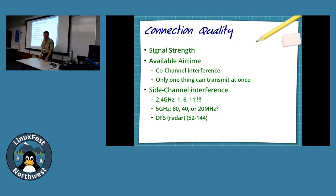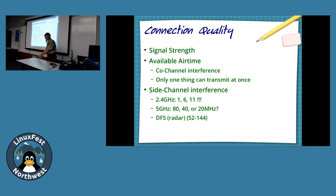If your laptop sitting next to the AP is at a lower rate, can someone sitting across the room communicate at 54 Mbps? Yes — because the rates are per client. You get airtime, they get airtime. It's up to the AP to divide it equally.